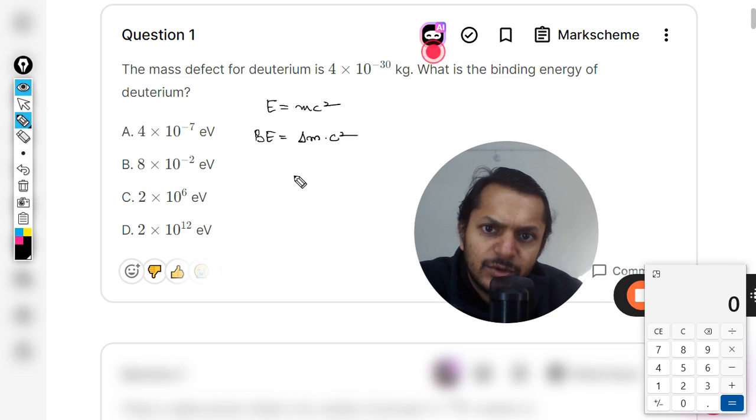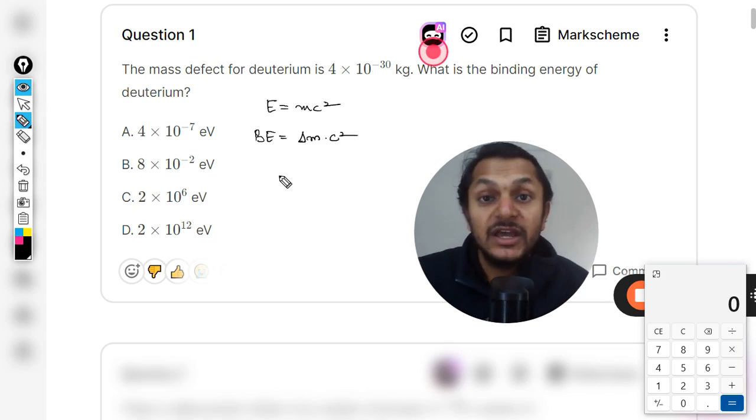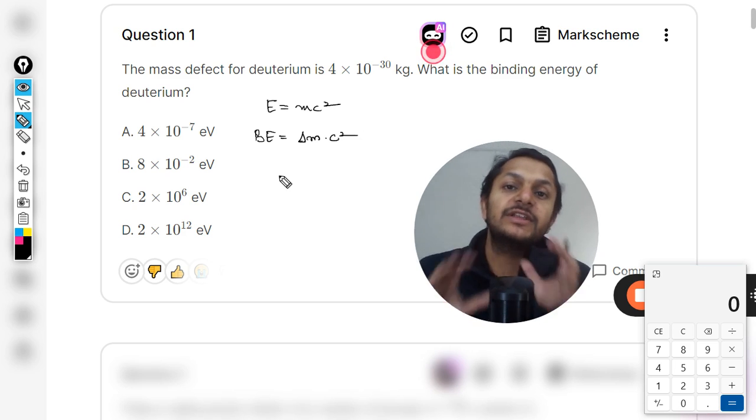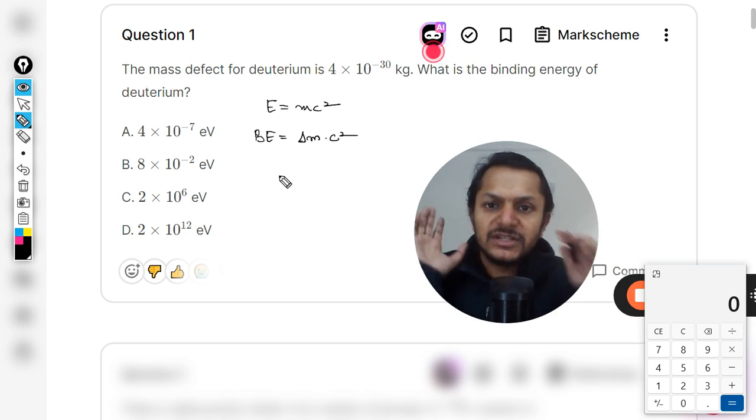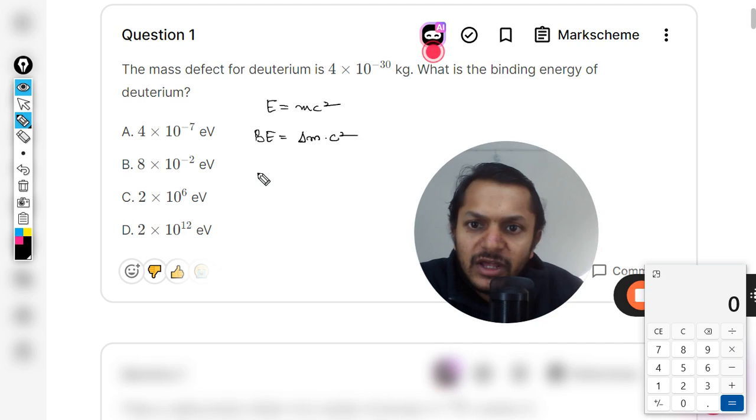Because this is the mass that has vanished and it got converted into energy, now that energy is called binding energy. Simple formula. We are now going to substitute our values here. So 4 × 10^-30...